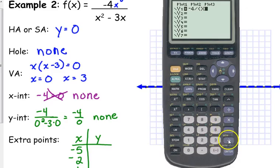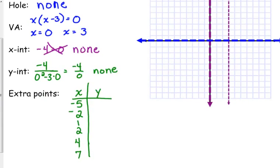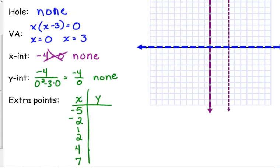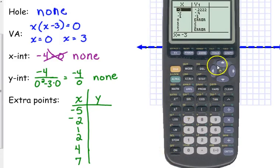The numerator is just a single number, so we don't have to put it in parentheses here. Make sure that the denominator is in parentheses. Go to your table. I'm going to scroll down. I'm going to jump in between the two.